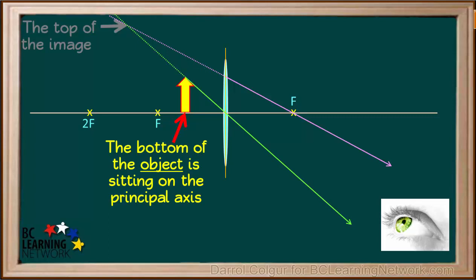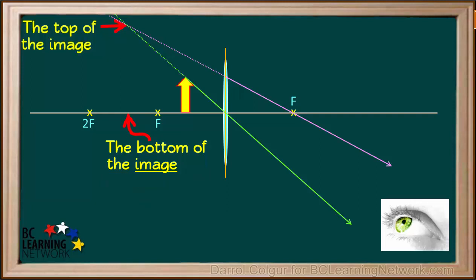So this is where the top of the image will appear. And because the bottom of the object is sitting on the principal axis, the bottom of the image will also be on the principal axis, right here directly underneath the top. So we can draw the image here.